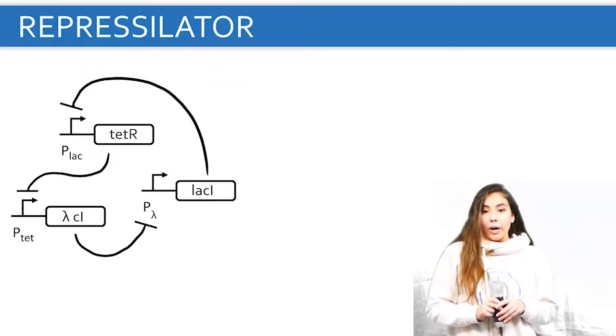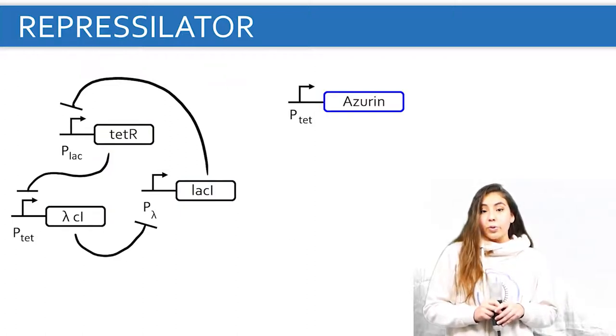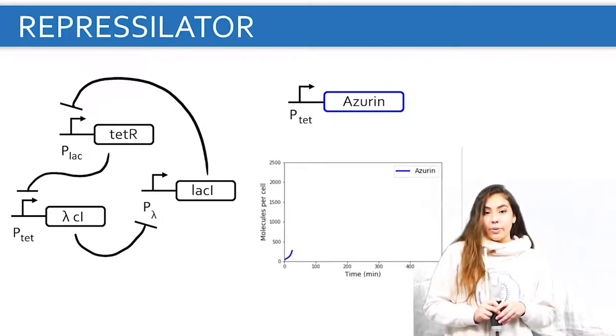After that, we coupled azurin production with the transcription of one of the repressilator proteins, thus obtaining an oscillatory synthesis of azurin.